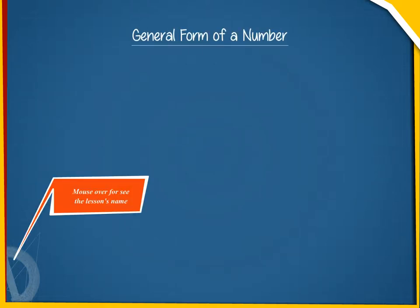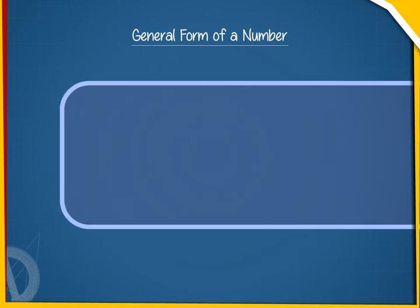General form of a number. We have learnt about the expanded form of numbers such as 73 equals 7 into 10 plus 3.